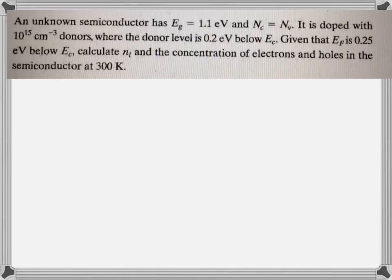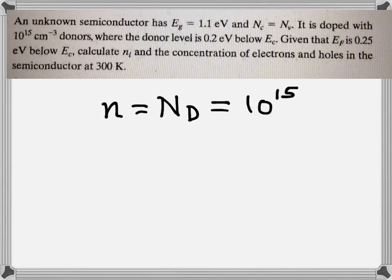We have a problem here. The semiconductor has a band gap of 1.1 electron volts and NC is equal to NV. It is doped with 10 to the power 15 per centimeter cubed donors, so we can assume that N is equal to ND. So concentration of N will be 10 to the power 15 per centimeter cubed.